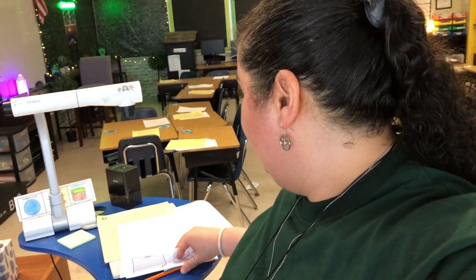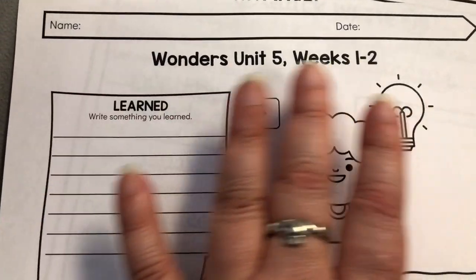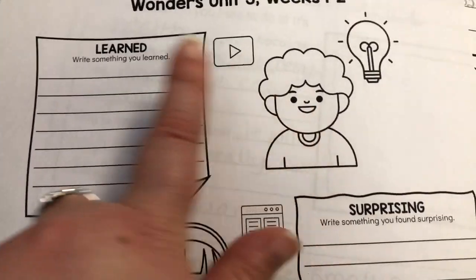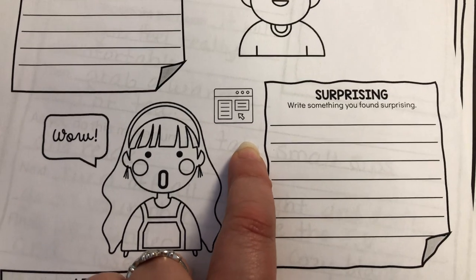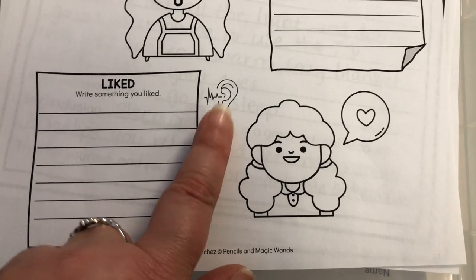After the quick write, we started the introduction to unit five, weeks one and two — what can you learn when you look closely at something. I had students watch the weekly opener video and the Study Blast, and I did the read-aloud with them. We're working with expository science texts. I created a new reflection sheet where students write something they learned from the video, something surprising from the Study Blast, and something they liked from the listening comprehension on a sticky note.